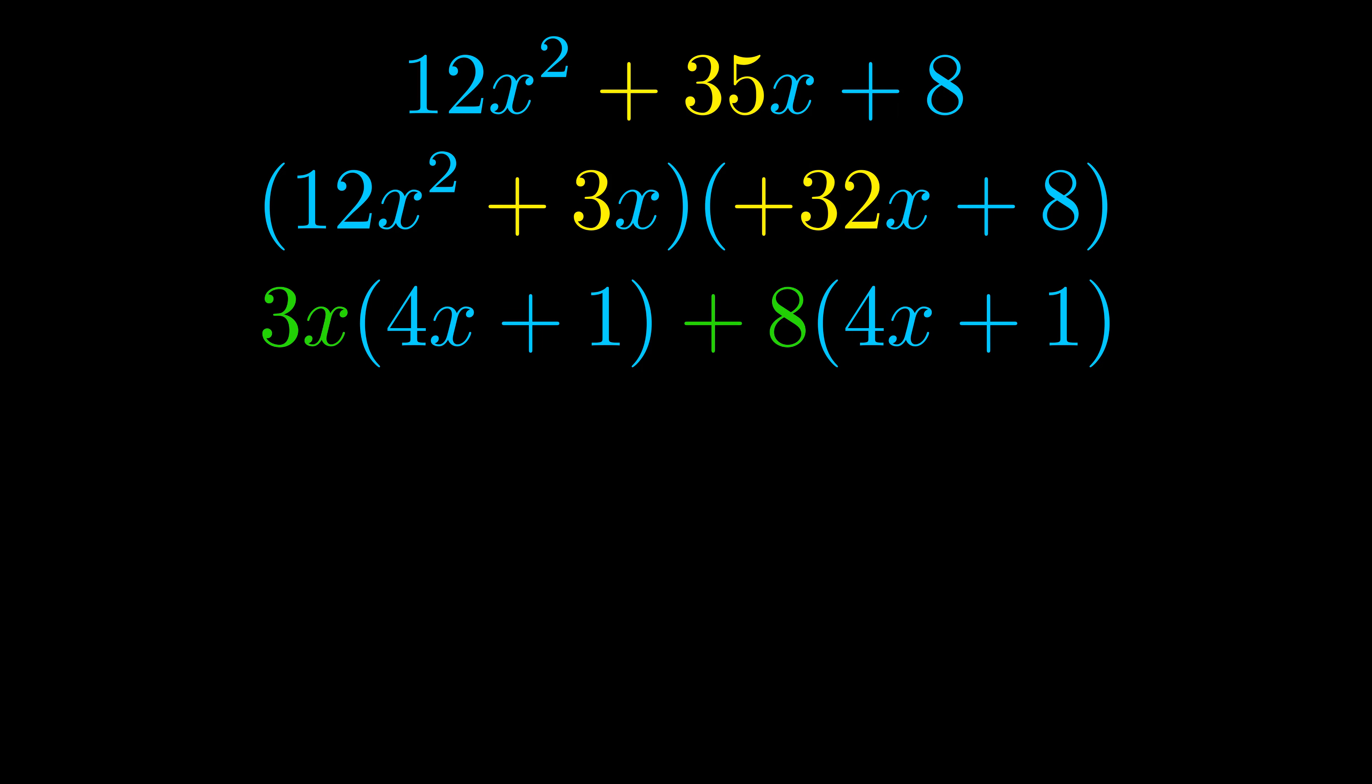Notice also how what remains inside of the parentheses is the same in both cases. The blue values are the same. Those blue values will become one of our factors and we will combine the two green values the GCFs that we pulled out to get the other one. And that is our fully factored equation.